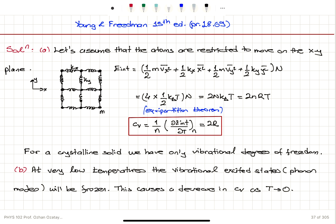At very low temperatures, these vibrational states may not be excited. Phonon modes can be frozen. That means we should expect a decrease in Cv as temperature goes to zero.